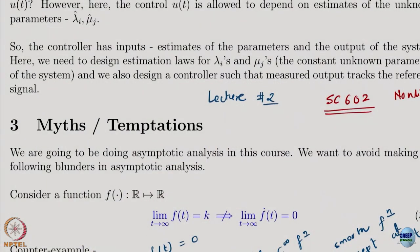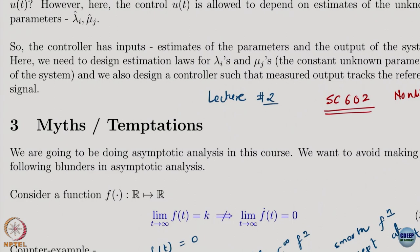It is true that if the function is constant for all time, then its derivative is 0 for all time — no doubt. But here we are not saying the function is constant for all time. All we are saying is the function is converging to a constant as t goes to infinity. In the limit, if the function converges to a constant, the derivative does not necessarily converge to 0.